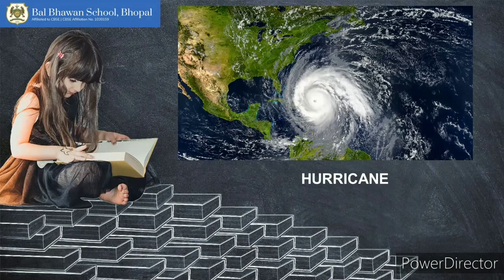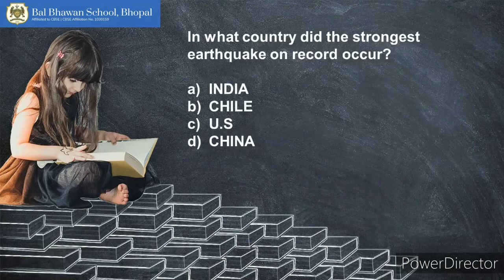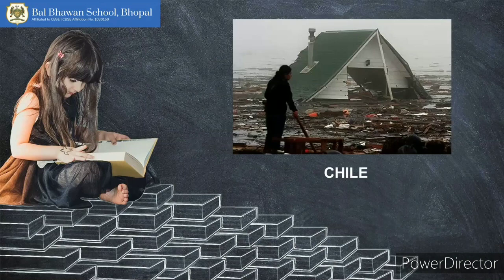Here comes the next question: In what country did the strongest earthquake on record occur? We discussed it yesterday — it's an easy one. Is it India, Turkey, China, or Chile? And the answer is Chile! On May 22, 1960, an earthquake off the coast of Chile measured 9.5 on the Richter scale.